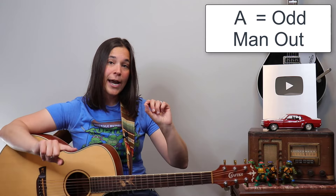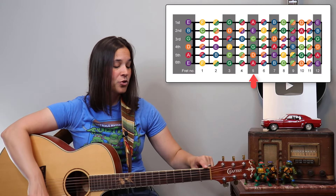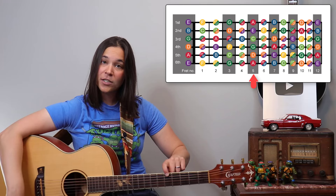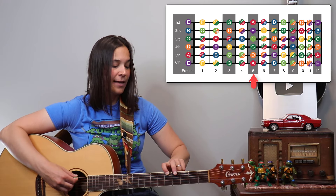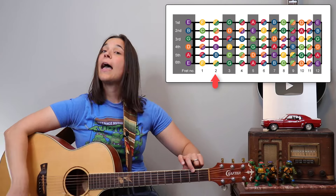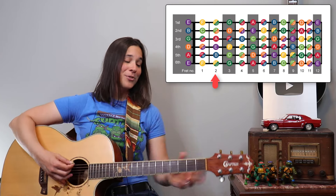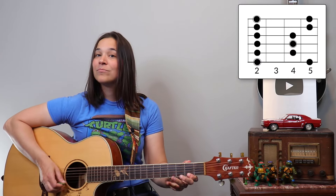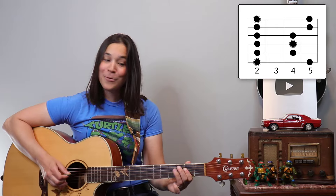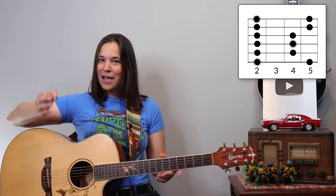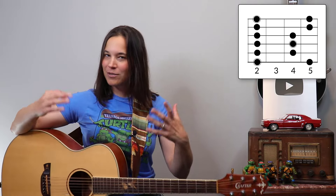D and E come next to each other in the musical alphabet, which means A is the odd man out. So find your A note on the top string — A is the fifth fret on the top string. Count back three frets and you end up at F sharp. So this is an F sharp minor pentatonic scale.